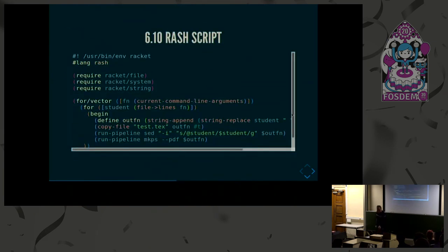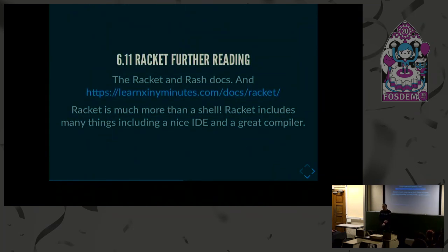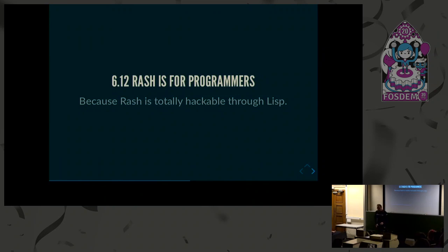Here's a more full Rash script showing a loop. The student file lists student names with spaces. I create a name removing the spaces, then copy the text file to the output file. And this is just a shell command. In a loop you can mix shell commands which have normal shell syntax. I think Rash is pretty cool. And for Guile, we have Gash - if it could do this type of thing that would be really interesting. Rash is interesting because it's totally hackable through Lisp. You learn one syntax and apply it for different things.